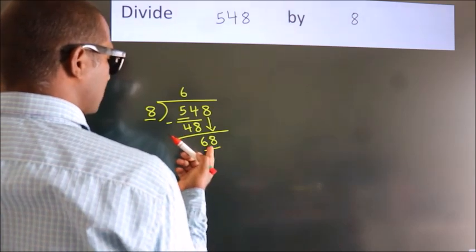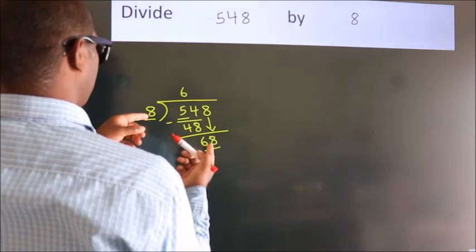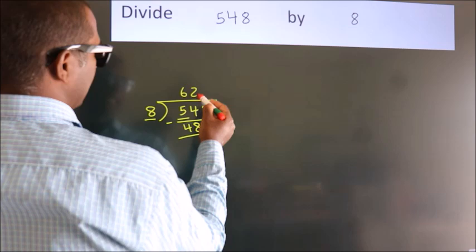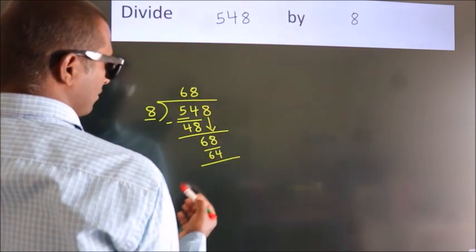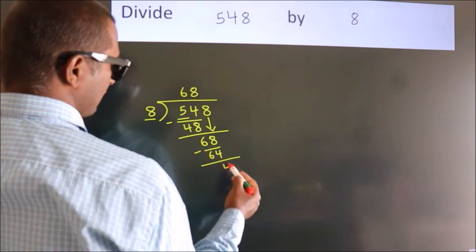A number close to 68 in 8 table is 8 times 8, 64. Now we subtract. We get 4.